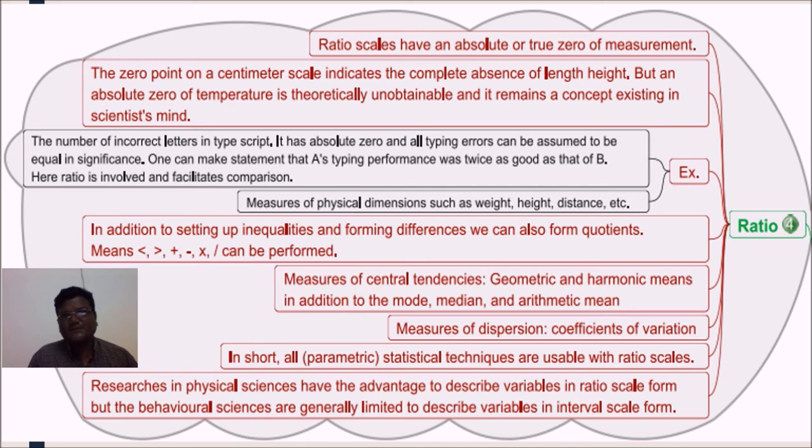In a nutshell, ratio scales have an absolute zero or true zero of measurement. This is the only scale which is having absolute zero. The zero point on a centimeter scale indicates the complete absence of length or height. But, an absolute zero of temperature is theoretically unobtainable and it remains a concept existing in scientist's mind. The number of incorrect letters in typescript, it has absolute zero and all typing errors can be assumed to be equal in significance. One can make statement that A's typing performance was twice as good as that of B. Here, ratio is involved and facilitates comparison.